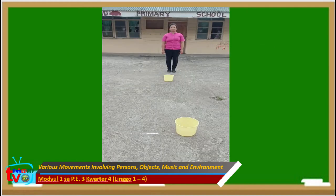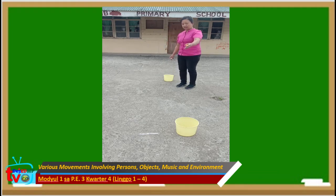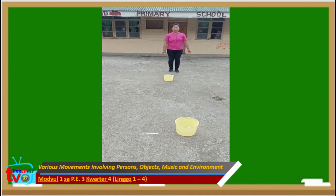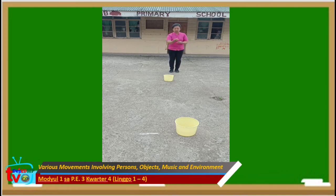Ang gagawin natin ngayon ay hakbang sa paglalaro natin ng shooting ladder. Dapat na ikaw ay may layong isang metro sa unang basket. Ang una at ang ikalawang basket ay may agwat na dalawang metro. Ang gagawin natin ay ihahagis natin ang bola sa basket para pumasok. Pansinin mo na habang mas malayo ang basket, ay mas lakasan ang paghagis sa bola para pumasok sa basket.